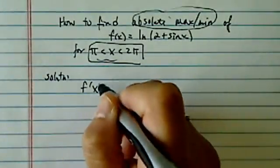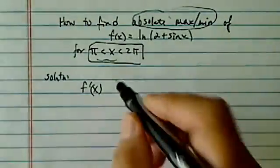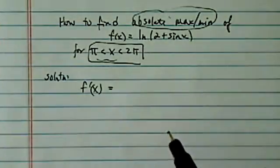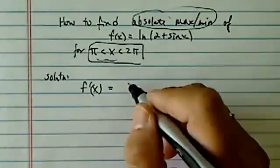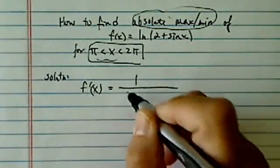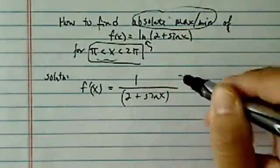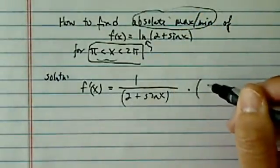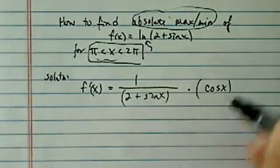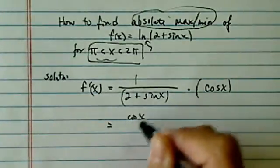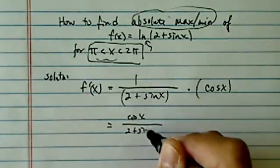First thing, of course, we need to find out where the slope equal to 0 for the first derivative. So first derivative of this one using chain rule is 2 plus sine x, that's of the ln part, times derivative of the sine, which is cosine. So we have cosine of x over 2 plus sine x.